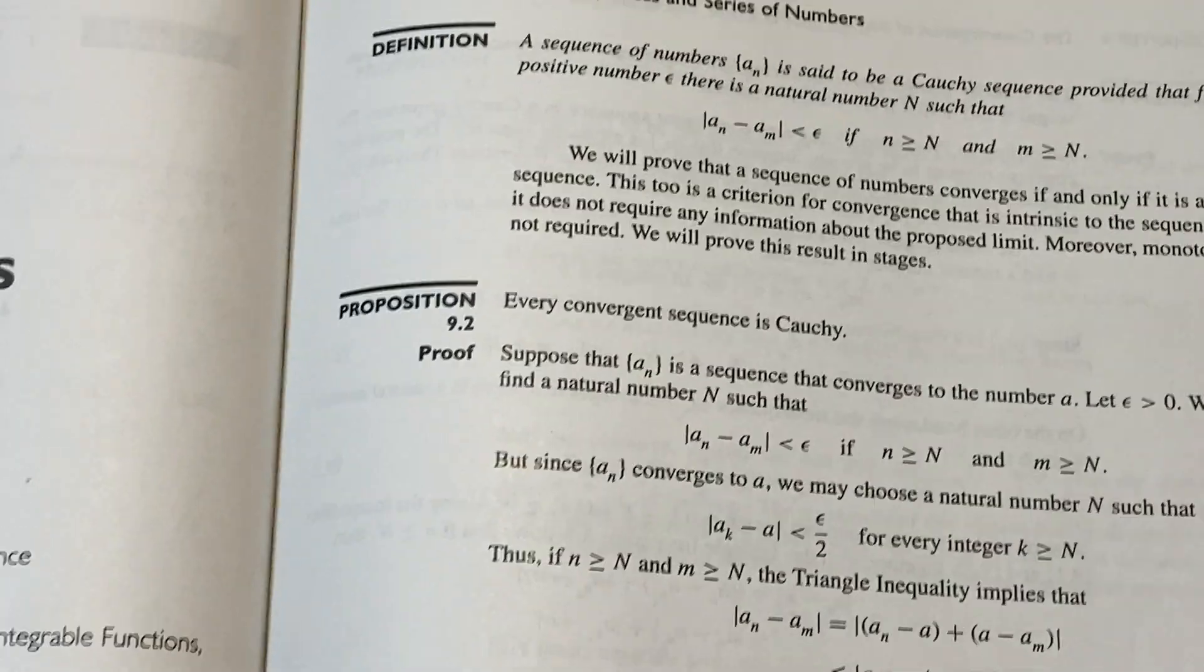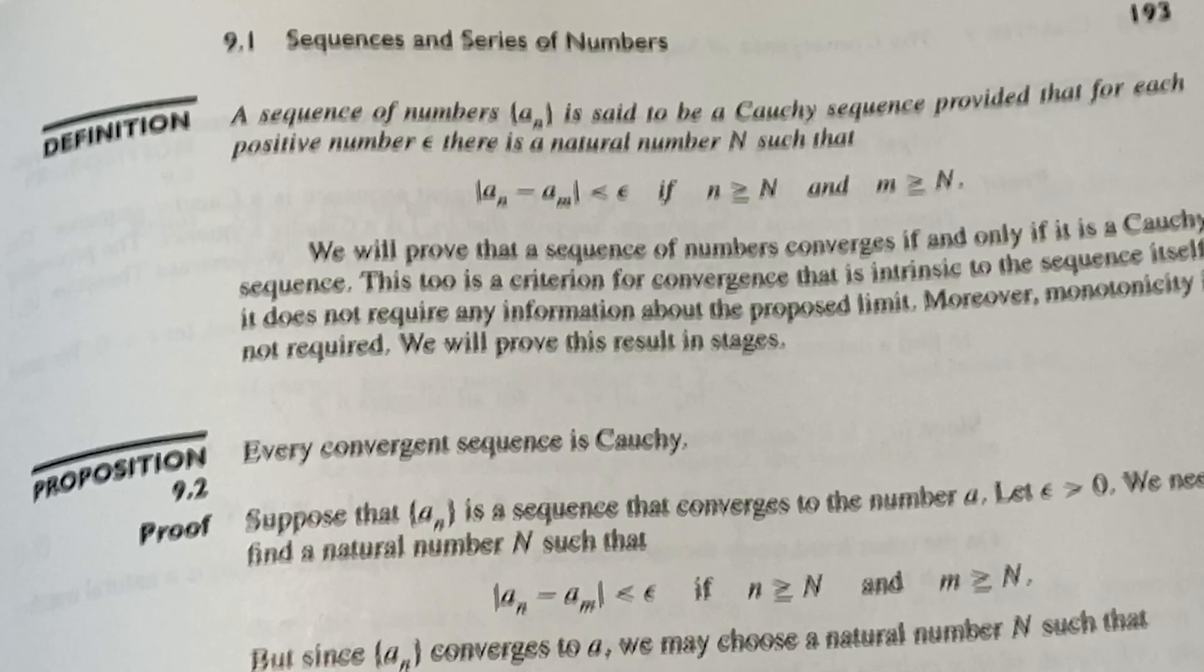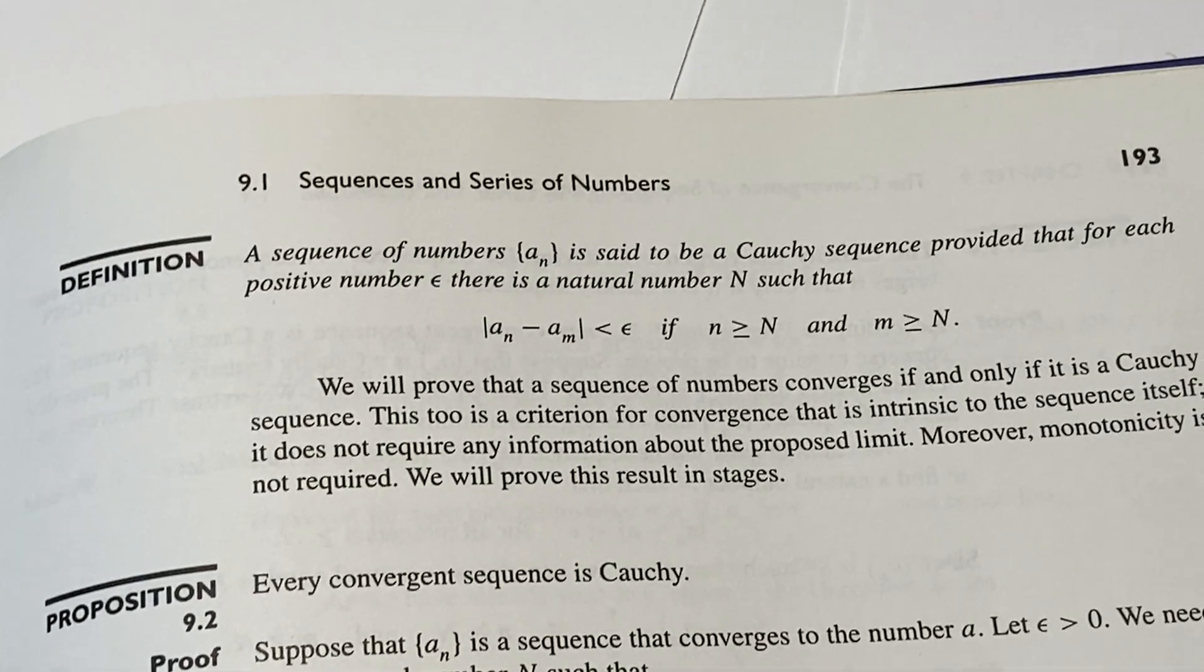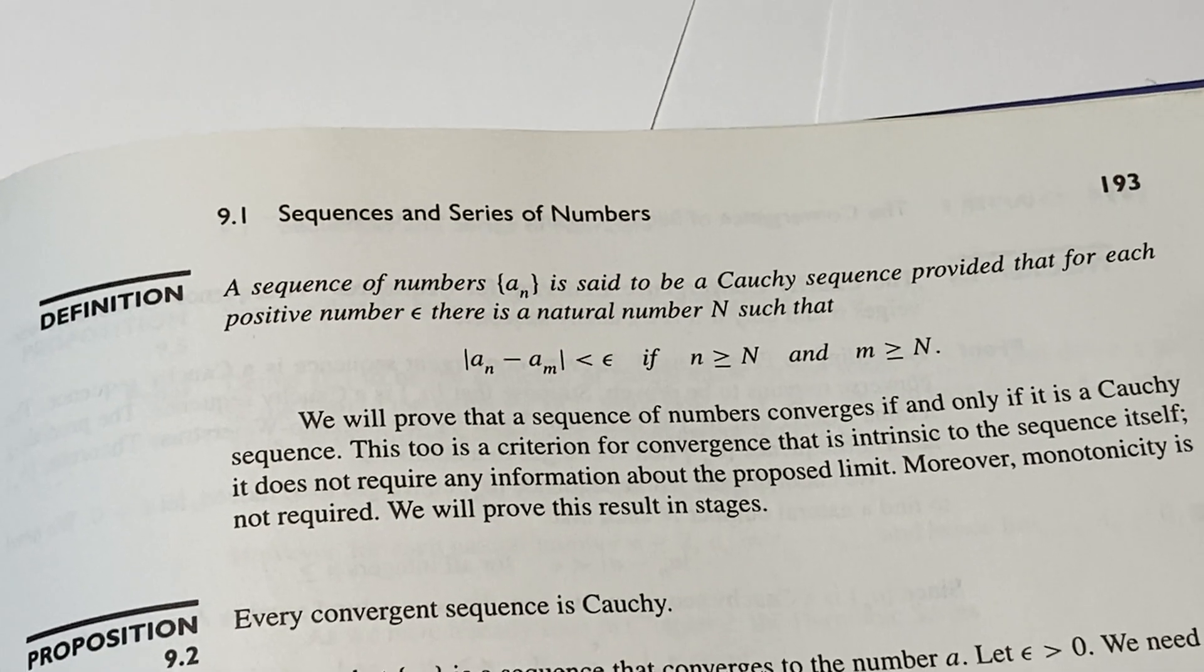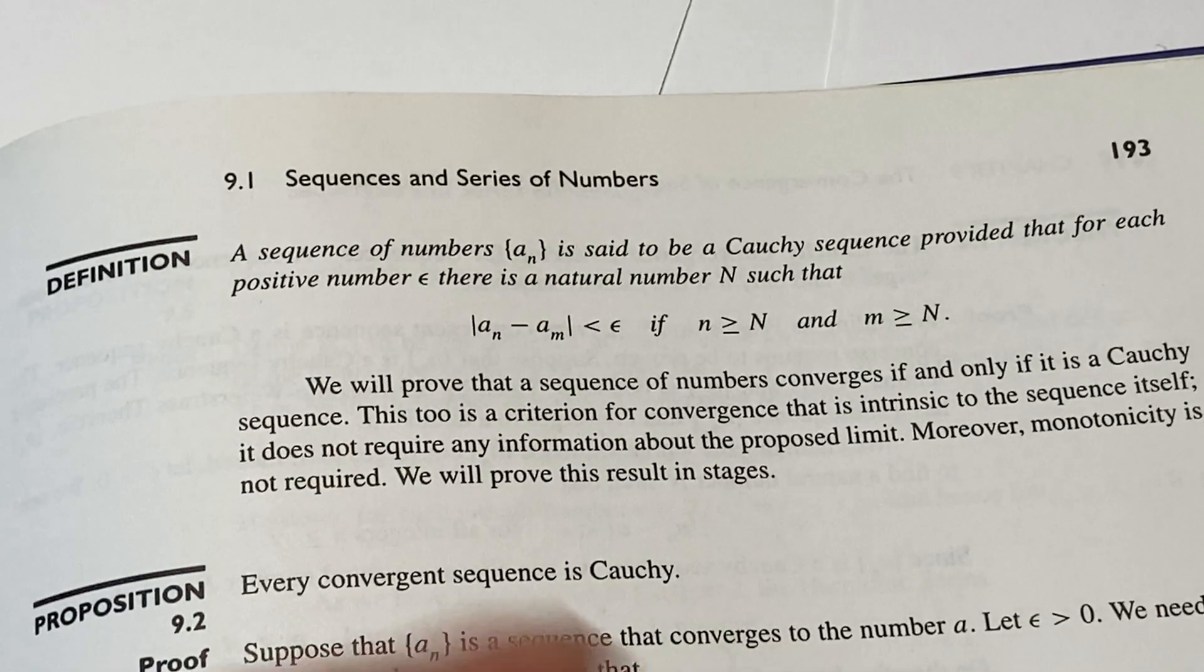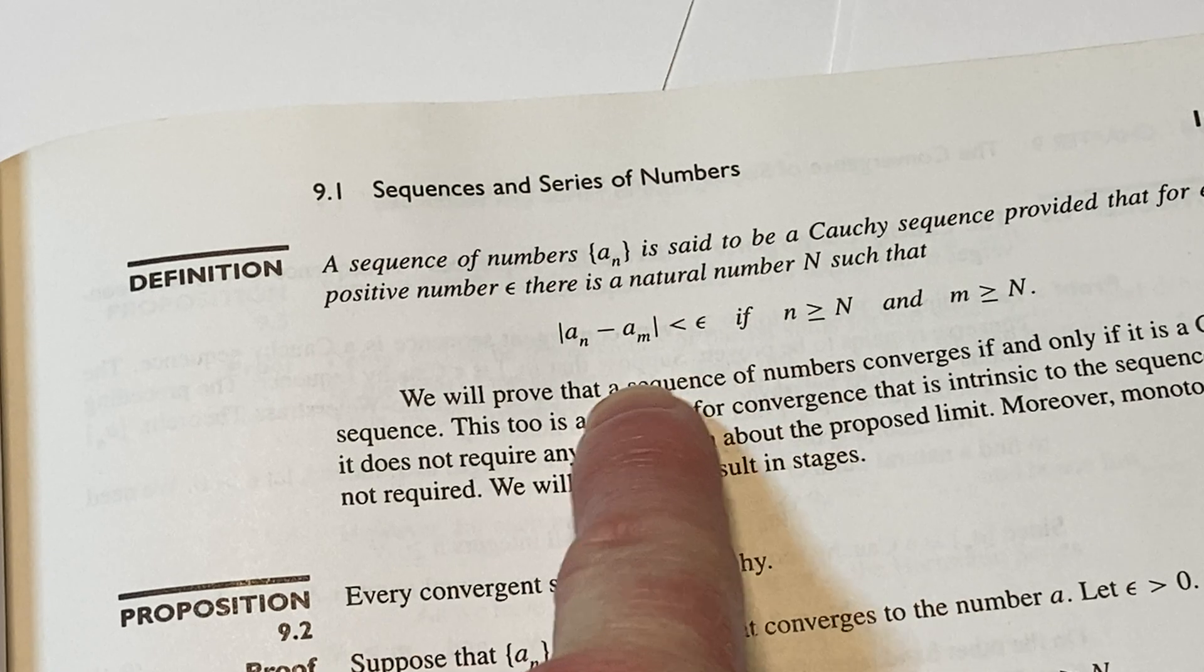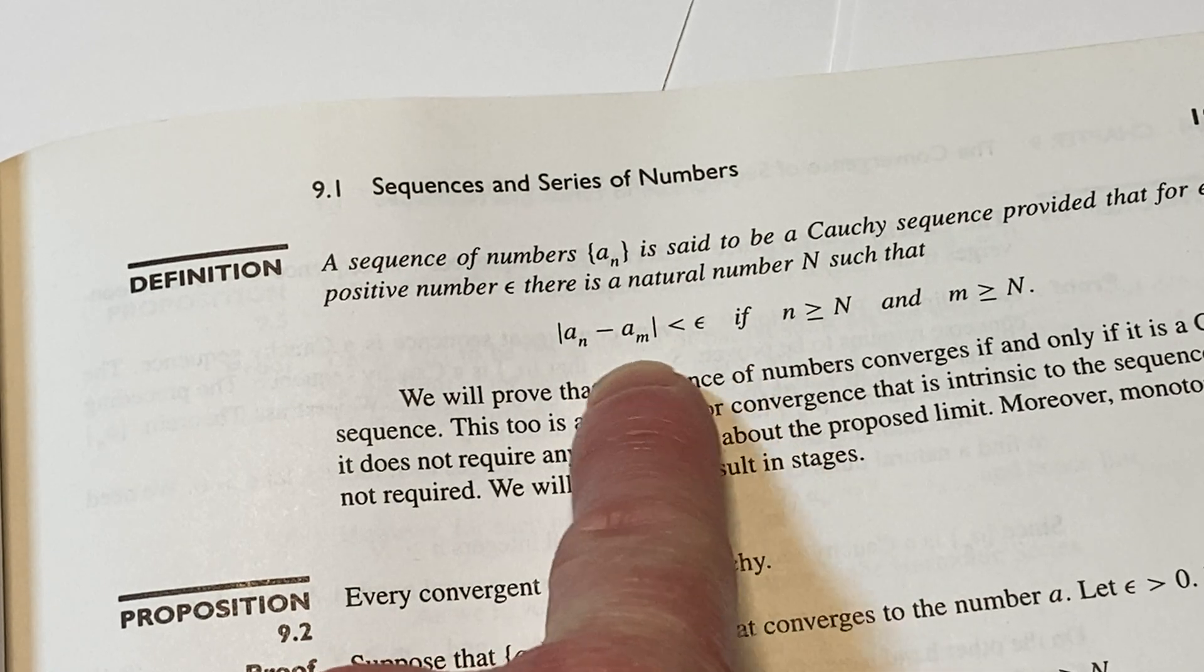So this is really cool. Now we're going to look at this here. And this is a definition. It says here, a sequence of numbers a sub n is said to be a Cauchy sequence, provided that for each positive number epsilon, there is a natural number n such that we have this inequality here.